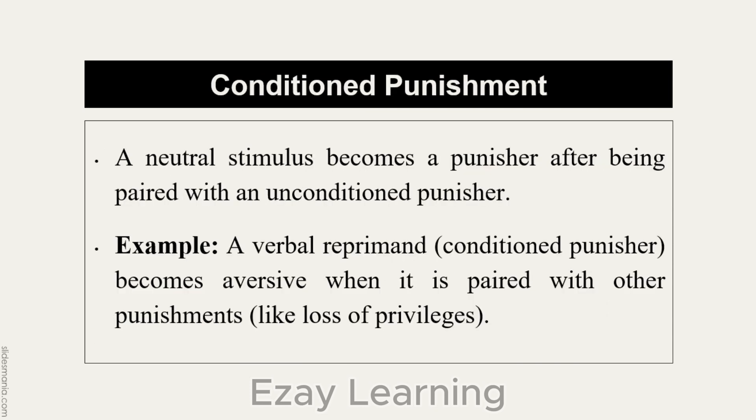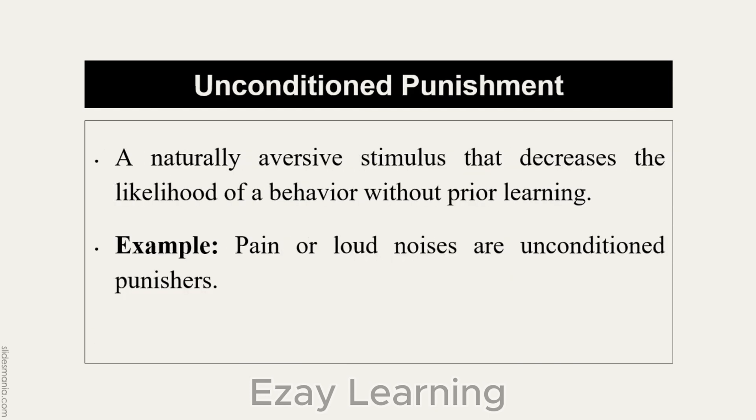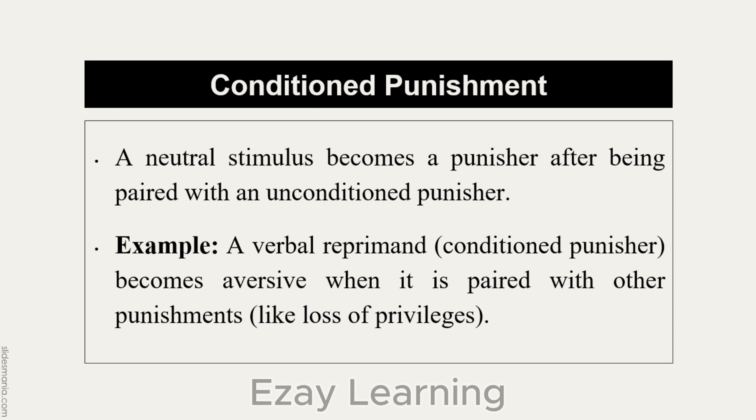The same principle applies to conditioned and unconditioned punishment. Conditioned punishment is when a neutral stimulus becomes a punisher after being paired with an unconditioned punisher. For example, loss of privileges is already an unconditioned punisher — we don't need any prior learning for this; it will automatically be an unconditioned punisher for us.